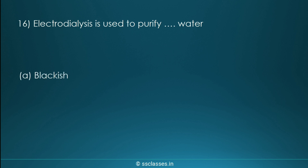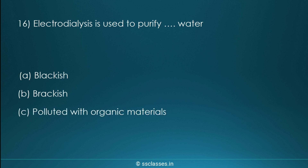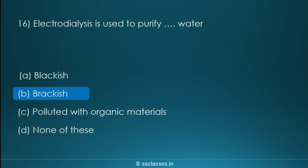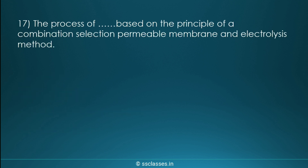Question seventeen: electrodialysis is used to purify which type of water? Options are blackish water, brackish water, water polluted with organic materials, or none of these. The correct answer is brackish water. Brackish water contains a large concentration of ionic impurities — remember this definition as it may also appear as an option.